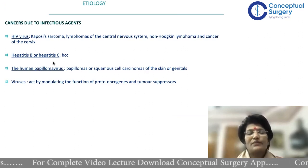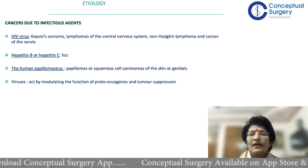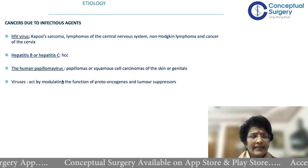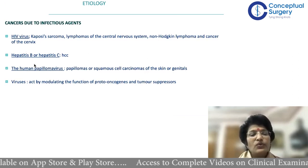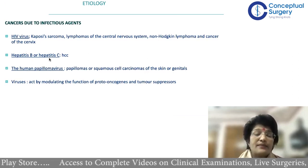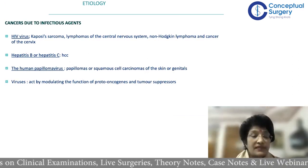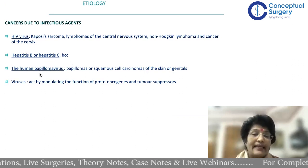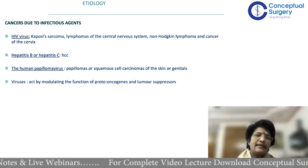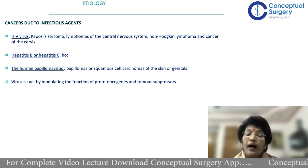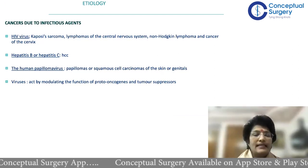We do know that certain cancers happen because of viruses — as I spoke about in the last lecture: Kaposi's sarcoma, lymphomas of the central nervous system, non-Hodgkin's lymphoma, and cancer of the cervix are all due to infection or viruses. Hepatitis B or hepatitis C virus may be associated with hepatocellular carcinoma. Squamous cell carcinoma of the cervix happens because of the human papilloma virus, with an interesting association with oral cancer also. Viruses integrate their genome with ours and modulate the functions of our proto-oncogenes and tumor suppressor genes, converting them into oncogenes.